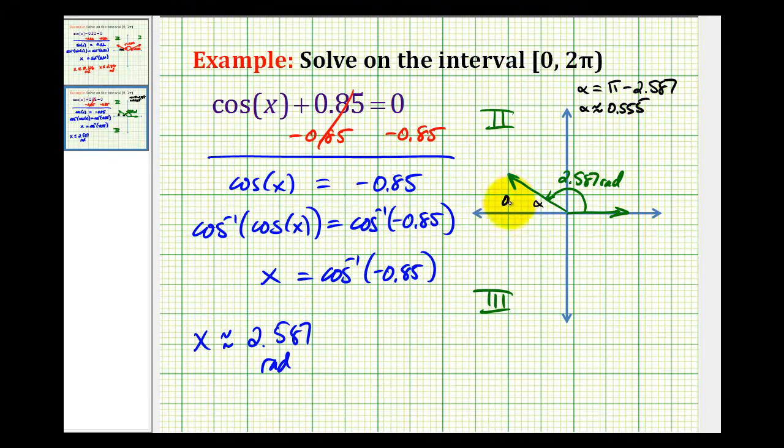So if this angle is 0.55 radians, then the solution that has the terminal side in the third quadrant would have the same reference angle. So it would look something like this, where again, this angle here is 0.55 radians. So now we need to determine what the measure of the second angle would be. It would start here and rotate to here. Well, that would be pi radians plus approximately 0.55 radians.